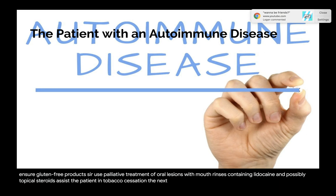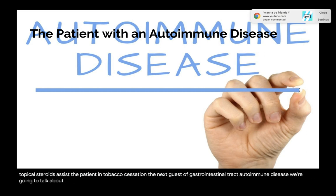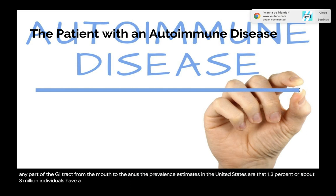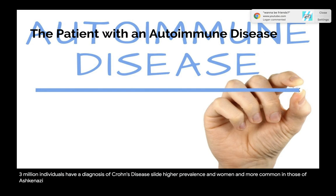Crohn's disease is a chronic, progressive, destructive inflammatory condition impacting any part of the GI tract from the mouth to the anus. Prevalence estimates in the United States are that 1.3%, or about 3 million individuals, have a diagnosis of Crohn's disease. There is a slightly higher prevalence in women and it is more common in those of Ashkenazi Jewish origin.